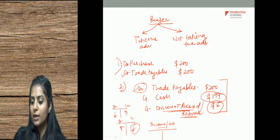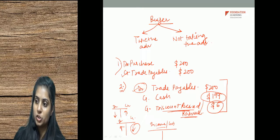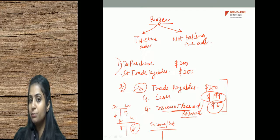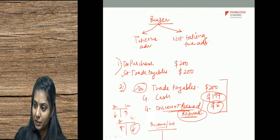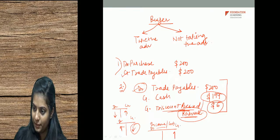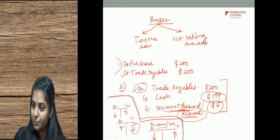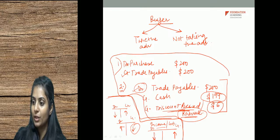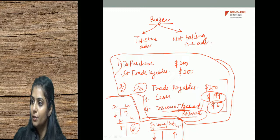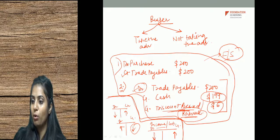Discount received can also be recorded as revenue. This depends on the entity's size — large corporates bifurcate and keep separate ledgers, while small sole ownership businesses may directly credit revenue. The rules: credit the increase for income/gain accounts, debit the decrease. Please be thorough with these rules — entries become easy when rules are at your fingertips, and journal entries are the foundation of accounting.